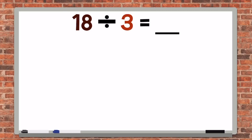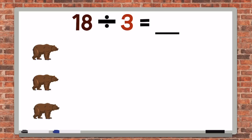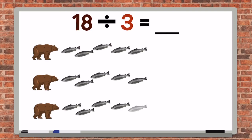18 divided by 3. We can think of this as 18 salmon divided by 3 grizzly bears. Here we have our 3 grizzly bears. Let's count to 18 until we run out. We notice that each grizzly bear is going to get 6 salmon to eat. 18 salmon divided by 3 grizzlies equals 6 salmon each.